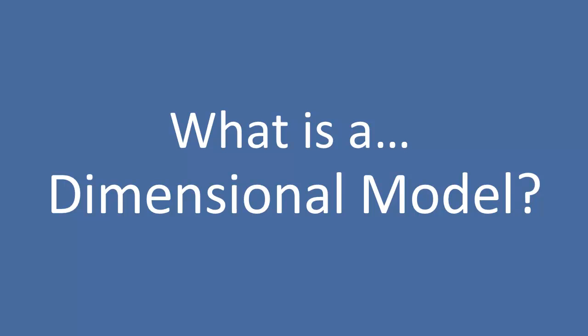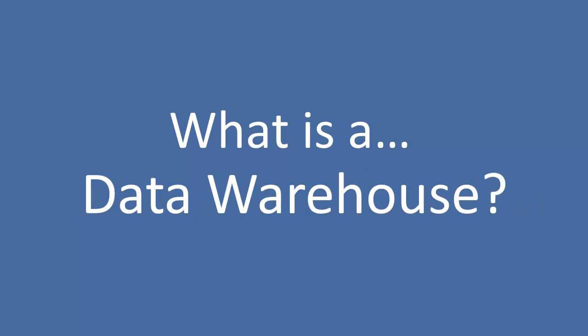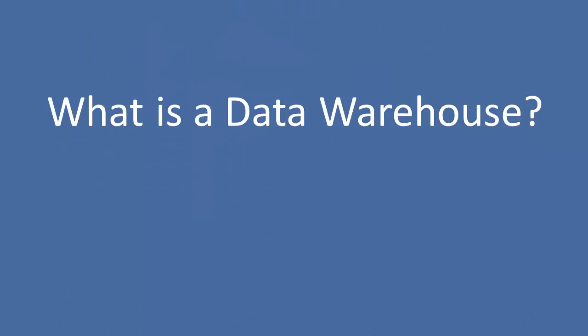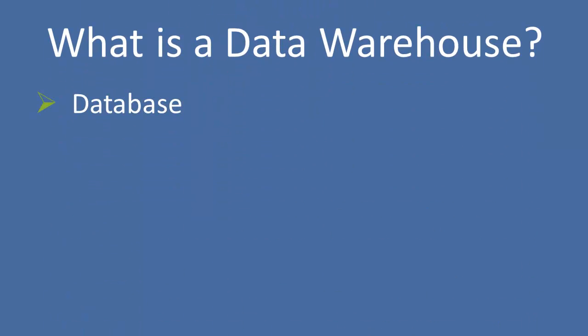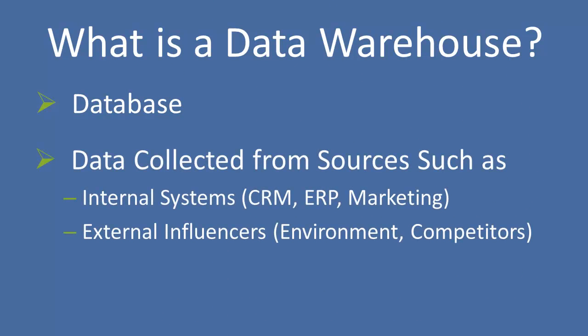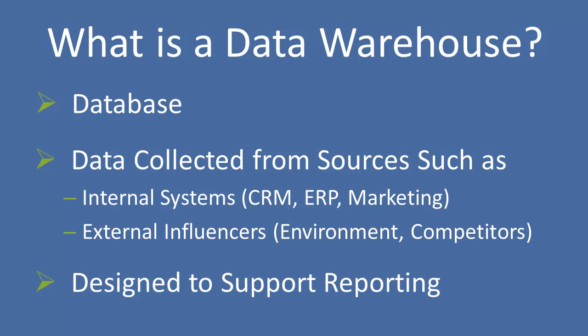To get started we should probably define what a dimensional model is. But because dimensional modeling really has everything to do with data warehousing, we need to first define what a data warehouse is. A data warehouse is simply a database — an area where data is stored. That information has been collected from other systems where the data actually originated, such as your CRM, your ERP, your marketing repository, or even external data like weather information or financial marketing information. A data warehouse is designed to support reporting and data analytics.